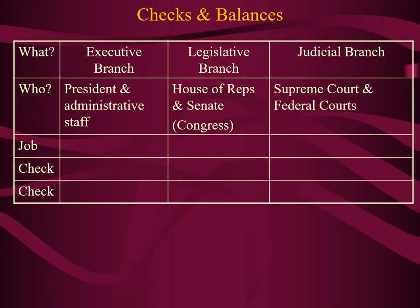The executive branch is made up of the president and all of the members of the president's administrative staff, like the members of his cabinet. The legislative branch is made up of the House and the Senate — collectively they're called Congress. And the judicial branch is made up of the Supreme Court, which is the highest court in the land, and all of the federal courts located in each state.